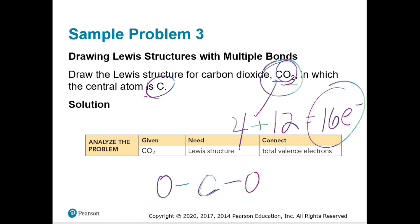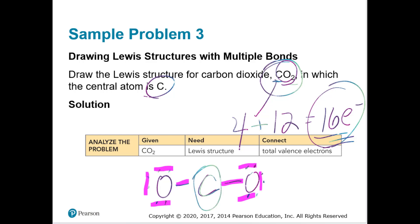Filling in lone pairs: five, six, seven, eight, nine, ten, eleven, twelve, thirteen, fourteen, fifteen, sixteen — that's 16 electrons. Checking the oxygens: each has eight electrons and is happy. But carbon only has four electrons — and carbon really wants eight.